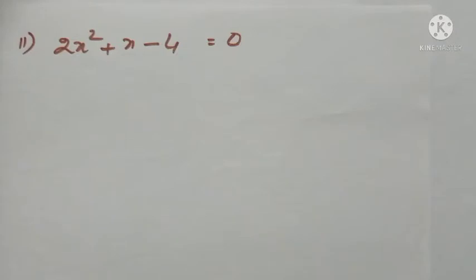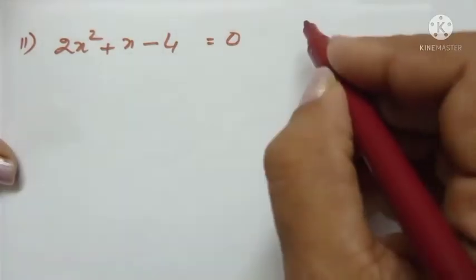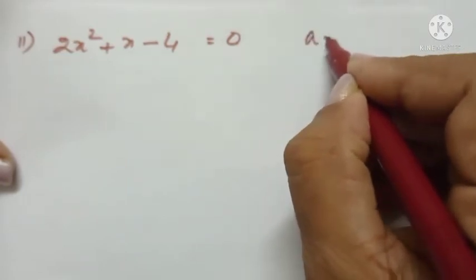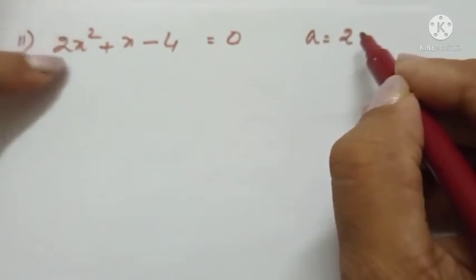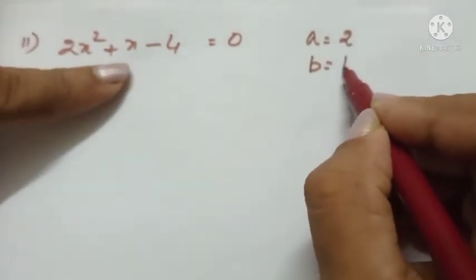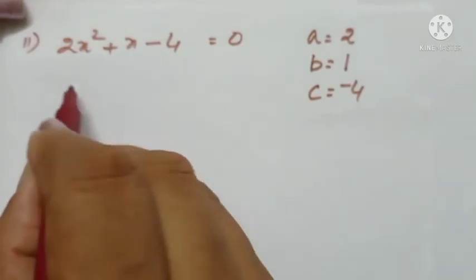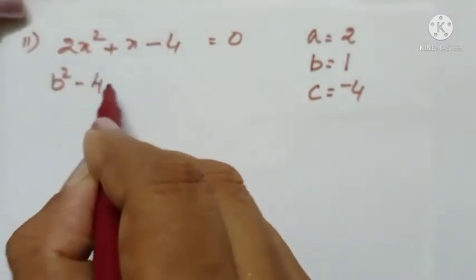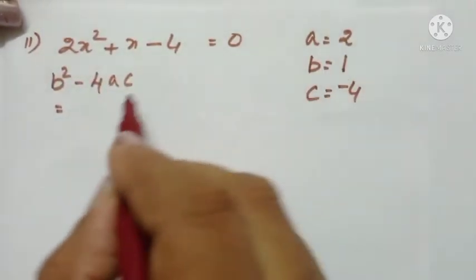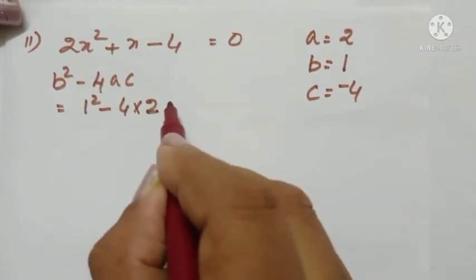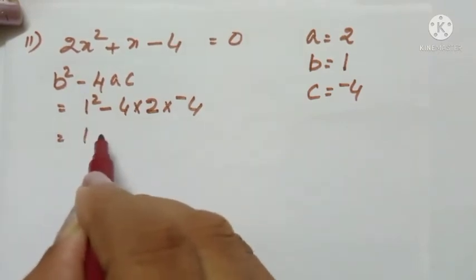The next equation is 2x² + x - 4 = 0. Comparing with the standard form ax² + bx + c = 0: a equals 2 (coefficient of x²), b equals 1 (coefficient of x), and c equals -4 (constant term). Now, b² - 4ac: b is 1, so b² = 1² minus 4 times 2 times (-4), which gives 1.